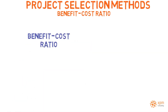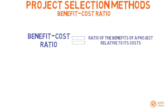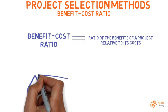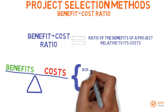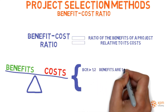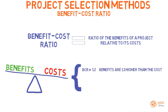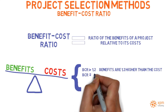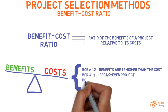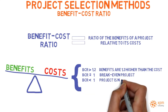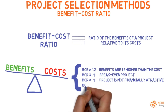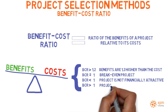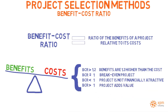A benefit cost ratio is the ratio of the benefits of a project relative to its costs. Benefits and costs should be expressed in discounted present values. A benefit cost ratio of 1.2 means that the benefits are 1.2 times higher than the cost. If the benefit cost ratio equals 1, it is a breakeven project. If it is less than 1, the project is not financially attractive. If it is higher than 1, the project adds value.